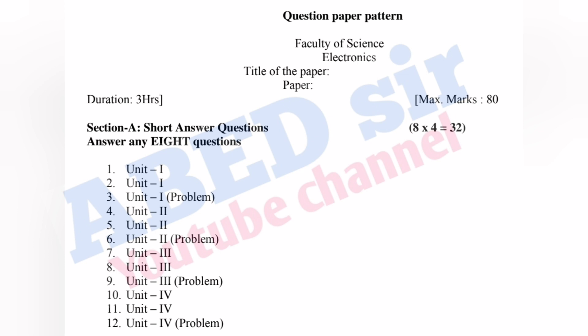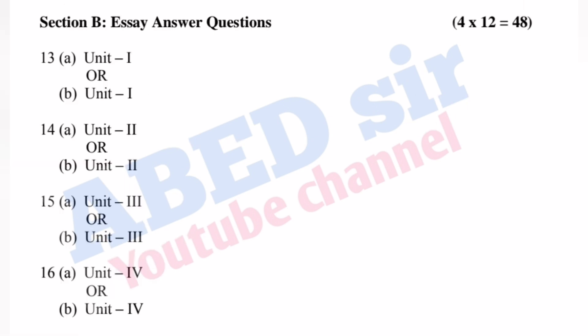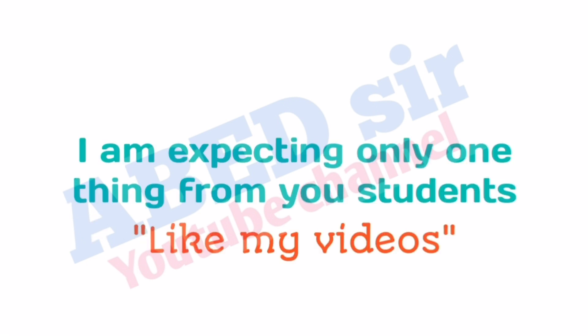In part B, mutual choice questions are there. Total four questions will be asked. You have to answer all these four questions and each one carries 12 marks. So four parts are 48 marks you will get from part B. Total 80 marks paper is there for the semester exam.